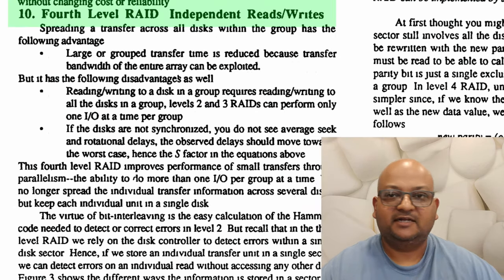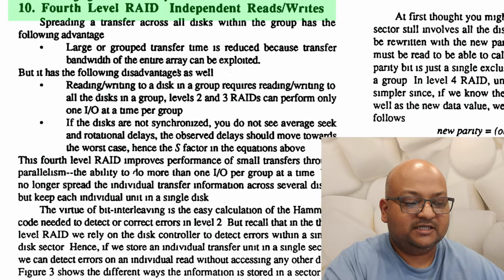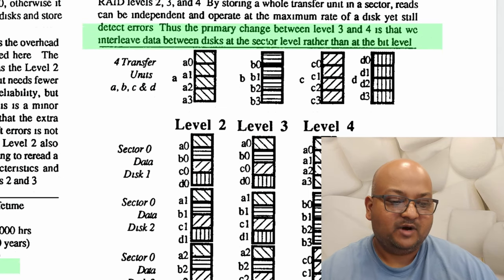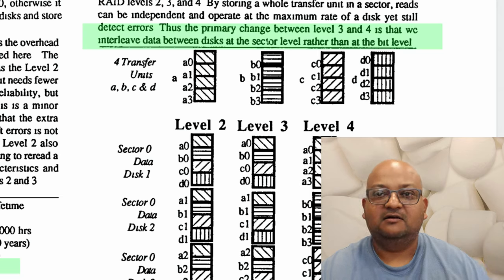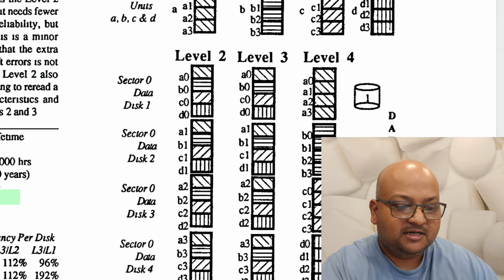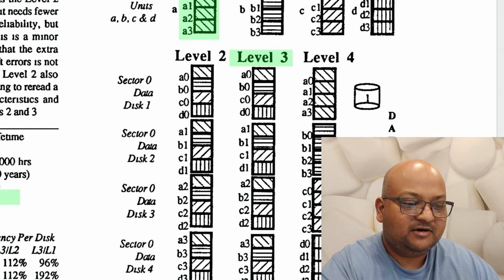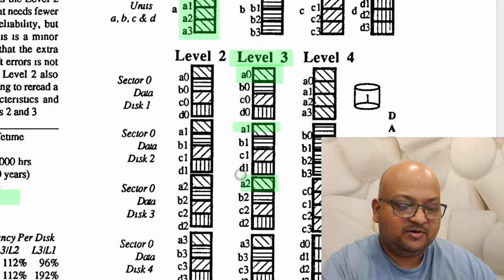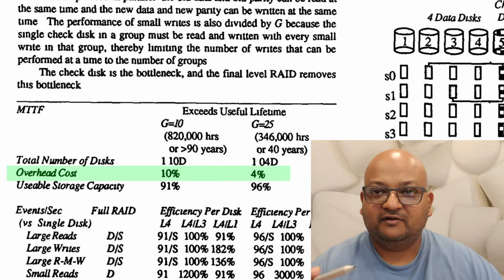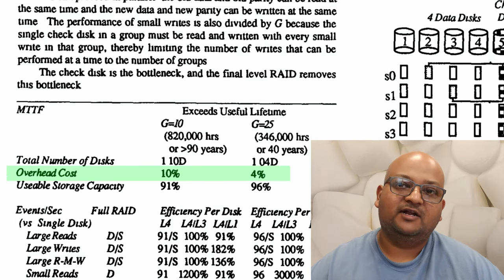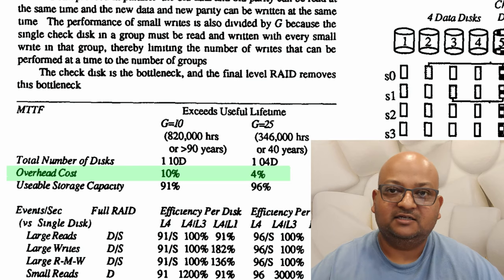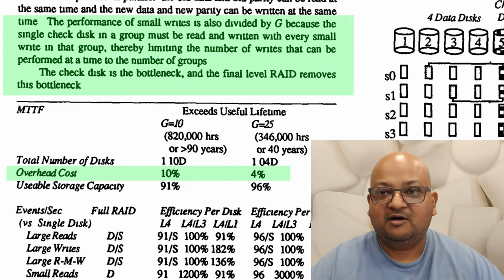This brings us to RAID level 4, which lets you do independent reads and writes. The goal is to be able to do more than one IO per group at a time, and the way they do that is by interleaving the data in a different way — at the level of a sector rather than at the level of bits. For example, in RAID level 3, if you wanted to read a transfer unit A which was spread across four sectors, that data was spread across multiple disks. Whereas in RAID level 4, it is all on one disk. The overhead cost for RAID level 4 is still pretty low and it allows us to parallelize reads, removing most of the performance bottlenecks for reads. But when we are doing writes, we still need to write to the check disk in every group, which means the check disk ends up becoming our bottleneck.